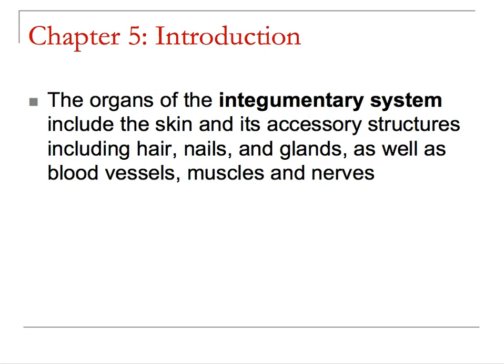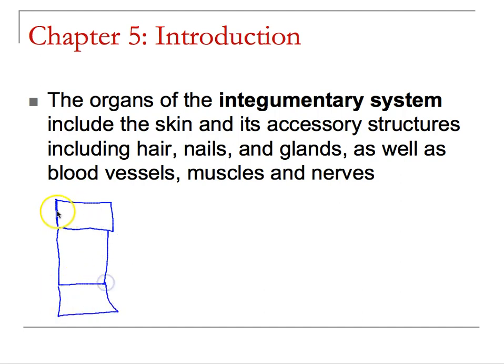In previous chapters we looked at how to build a cell and what different types of tissues we make. Now we want to take those individual tissue types — there are four — and build the integumentary system, which consists of the epidermis, dermis, and hypodermis.